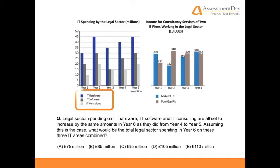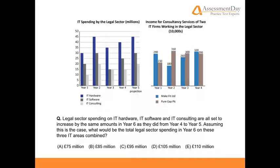The question reads: Legal sector spending on IT hardware, IT software, and IT consulting are all set to increase by the same amounts in year 6 as they did from year 4 to year 5. Assuming this is the case, what is the total legal sector spending in year 6 on these three IT areas combined? A. £75 million. B. £85 million. C. £95 million. D. £105 million. Or E. £110 million.